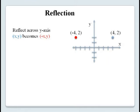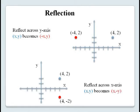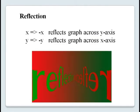Imagine reflecting a point across the y-axis — you can see we get the point with a negated x-value. In particular, the y-value stays the same and the x-value is reversed. Similarly, if we reflect across the x-axis, the x-value stays the same and the y-value is reversed. In general, if we replace x with minus x, this reflects our graph across the y-axis. And replacing y with minus y reflects across the x-axis.